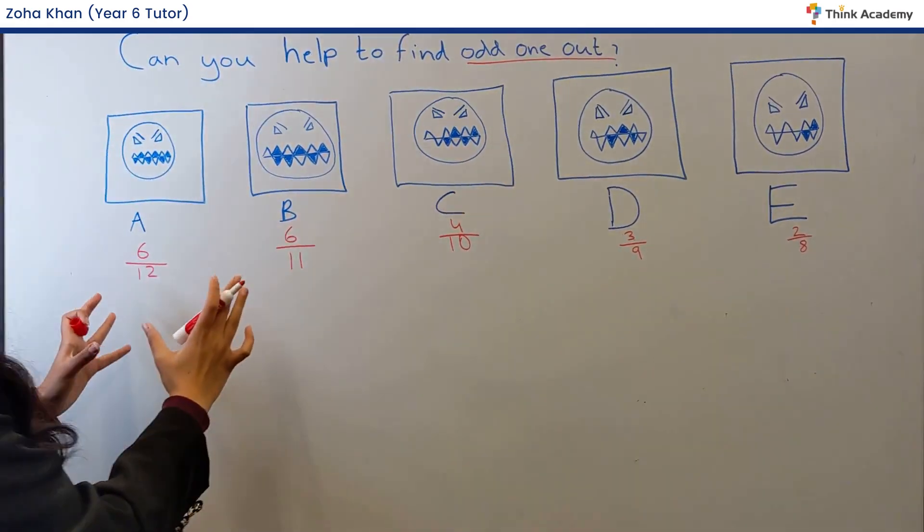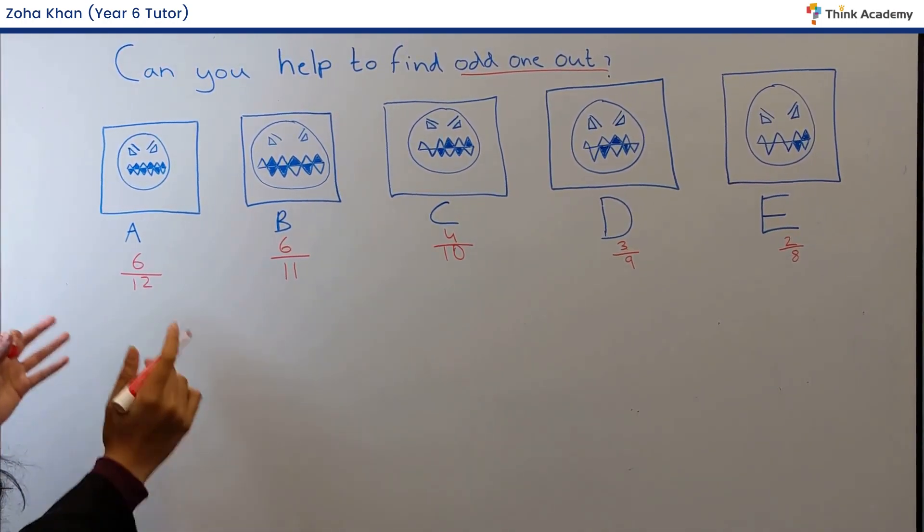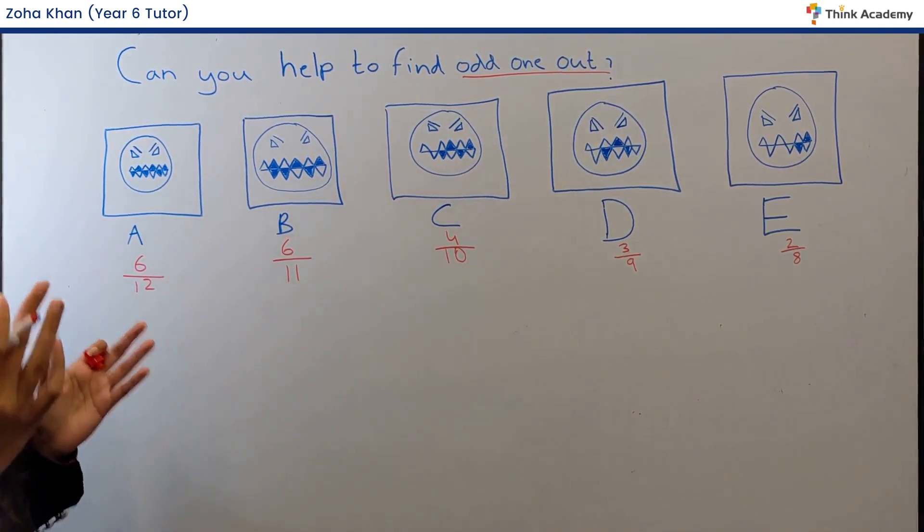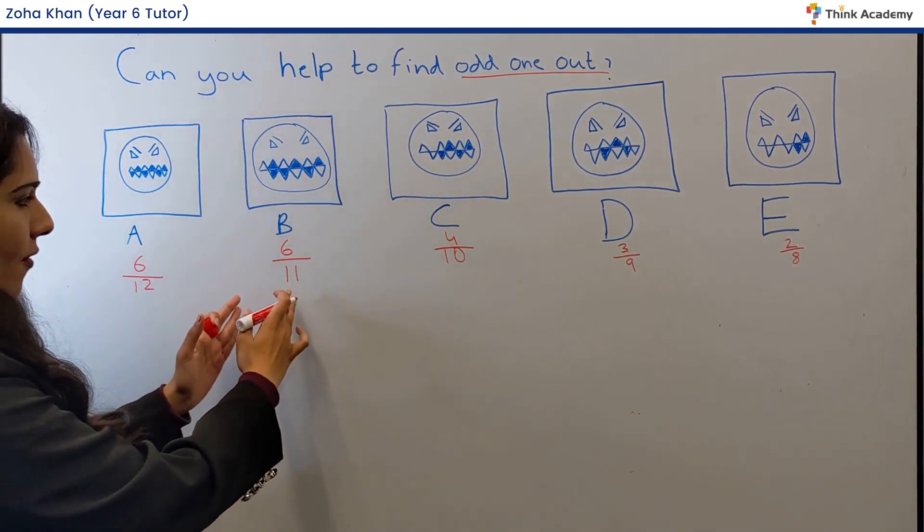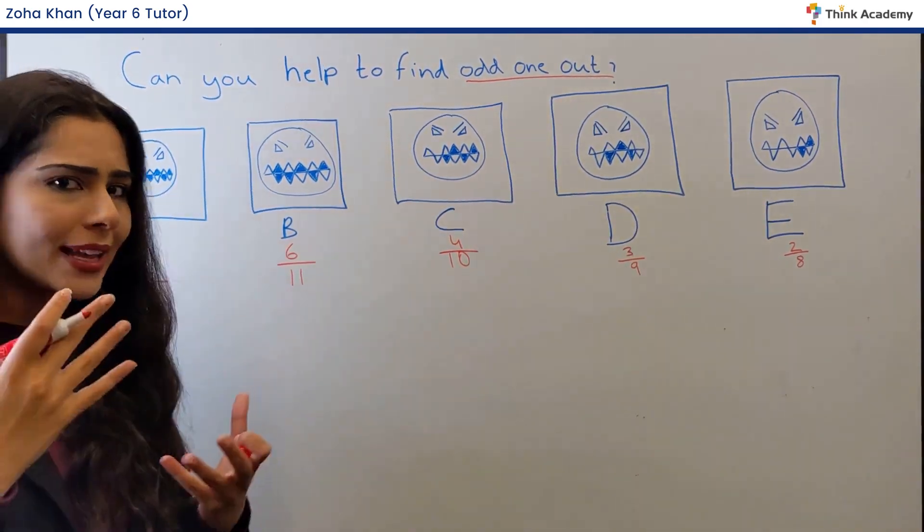So now that we've got all the fractions for all of these options, we see that the denominator is decreasing by one. So we've got 12 goes to 11, 11 goes to 10, 10 goes to 9, 10 goes to 8. So we're seeing some sort of pattern here.